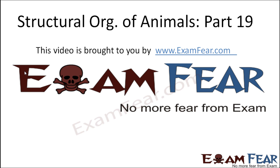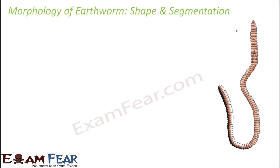This video on structural organization of animals part 19 is brought to you by examfear.com. Other than the basic characteristics shared by annelids, there are some specific things which are true only for earthworm, because not everything that falls under annelids is exactly the same — there are many worms which are segmented, celomate, and triploblastic, yet still very different from each other.